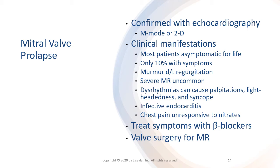Mitral valve prolapse has a broad range of severity. About 10% of those with mitral valve prolapse become symptomatic. A characteristic finding is a regurgitation murmur that is louder during systole. Mitral valve prolapse does not alter S1 or S2 heart sounds. Severe mitral valve regurgitation is an uncommon but serious complication. Dysrhythmias such as premature ventricular contractions, paroxysmal supraventricular tachycardia, and ventricular tachycardia may cause palpitations, lightheadedness, and syncope.